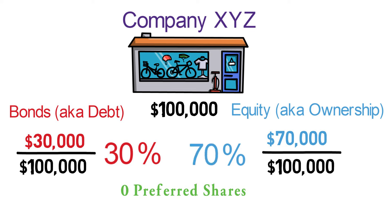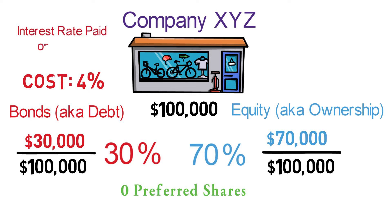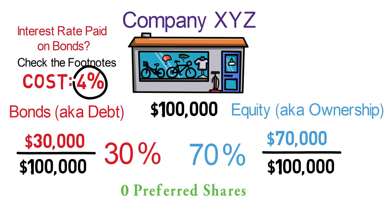Let's imagine that the cost of debt is 4%. Debt is generally quite simple to calculate — what is the interest rate on the debt? In this example, we can say that we only have one bond for $30,000 and therefore we can just use the interest rate we pay on that bond, which is 4%. Many public companies publish their average cost of debt, so you can generally just use what they give you in the footnotes of their financial statements. But for our example, we're going to stick with 4%.